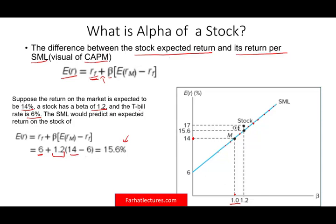Now, when we said a beta of 1.2, when we said this stock is a beta of 1.2, the expected return of this stock should be 15.6%. So per the capital asset pricing model, the expected return of this stock should be 15.6%.